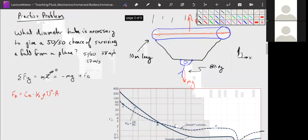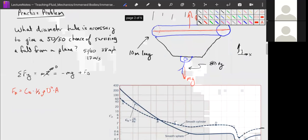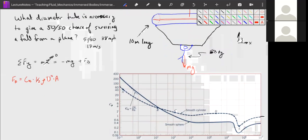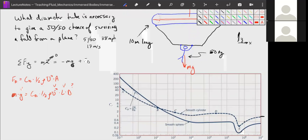So we can plug this into our formula and we get zero, mass times gravity is equal to our drag coefficient times one half rho u squared times L times d. We don't know d. We know our length, we know our velocity, we know our mass, we know our gravity.